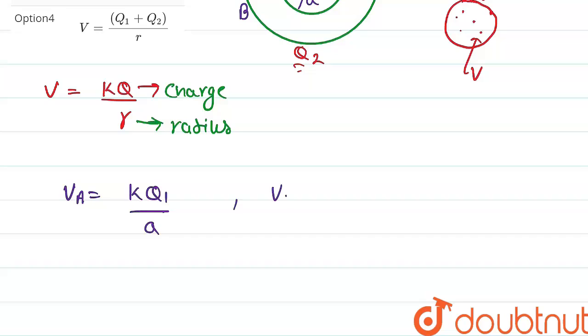And similarly, VB, the potential due to shell b at distance r from the origin, that will be kq2 upon b, because the charge is q2 and the radius is b.